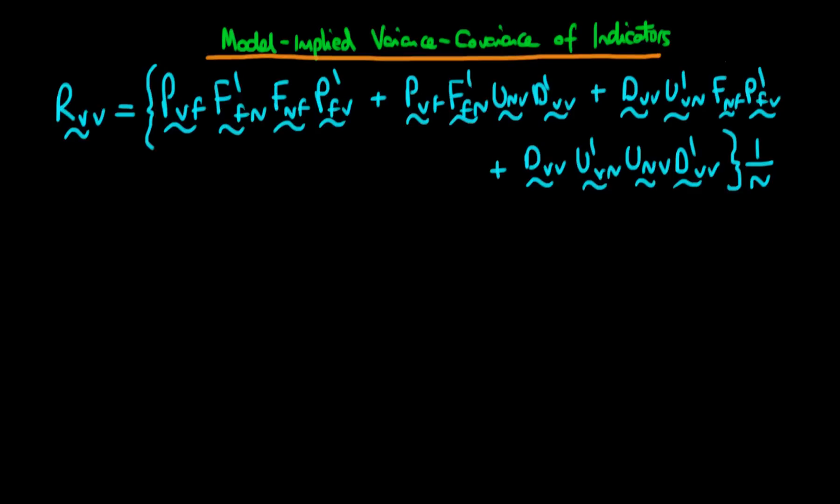In this video, I want to continue our discussion of the model-implied variance and covariance of indicator variables when we're talking about our model as being written down in its matrix form. And at the end of the last video, we got an expression which started to look something like the one we have here, which on first glance appears quite unwieldy. So how do we proceed?